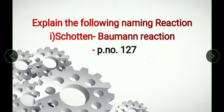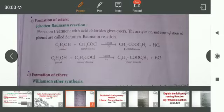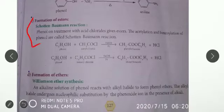Schotten-Baumann reaction is on page number 127. Here, the formation of esters — isn't it the formation of esters? That is the answer. Schotten-Baumann reaction: the formation of ester. We have to write the answer from here to here. This is the answer for this question.